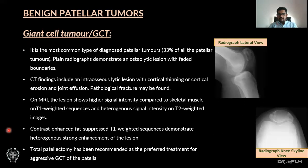Giant Cell Tumour is the most common type of patella tumour, comprising one third of the total patella tumours. Plain radiographs demonstrate an osteolytic lesion with faded boundaries. CT findings include an intraosseous lytic lesion with cortical thinning or cortical erosion and joint effusion. Pathological fracture may be present in some cases.